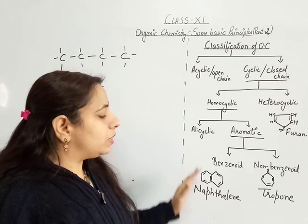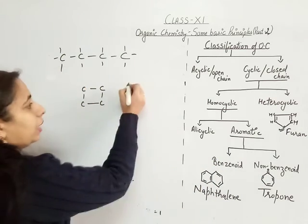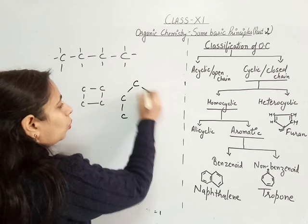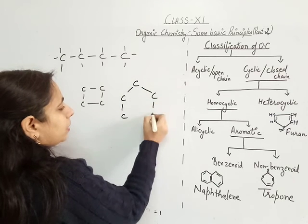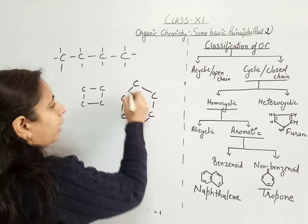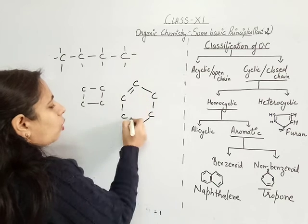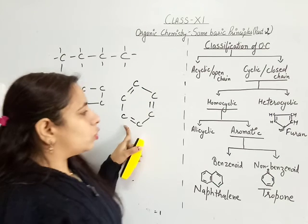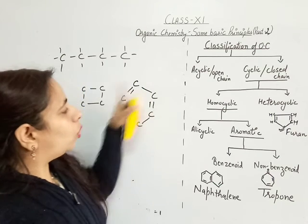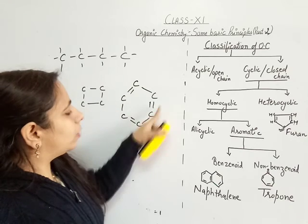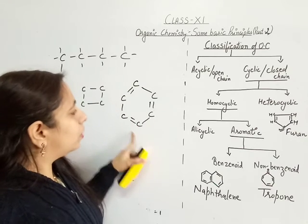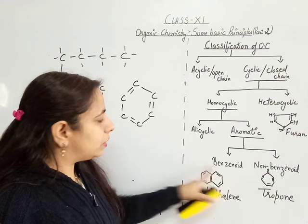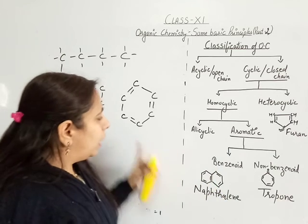Benzenoid means compounds in which the benzene ring is present. For example, benzene itself — six carbon atoms attached to each other with alternate single and double bonds, forming a closed ring with all carbon atoms and an aromatic character. Hence it is an example of a benzenoid compound.